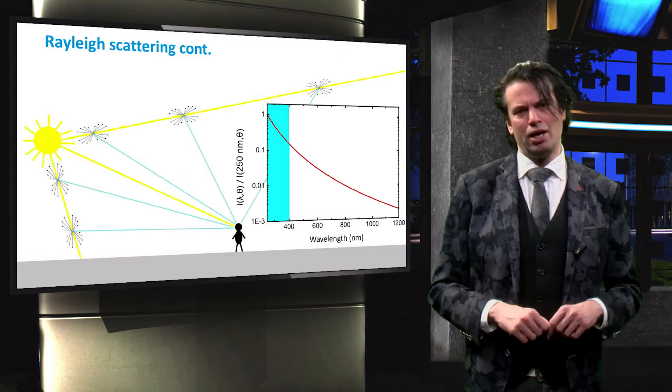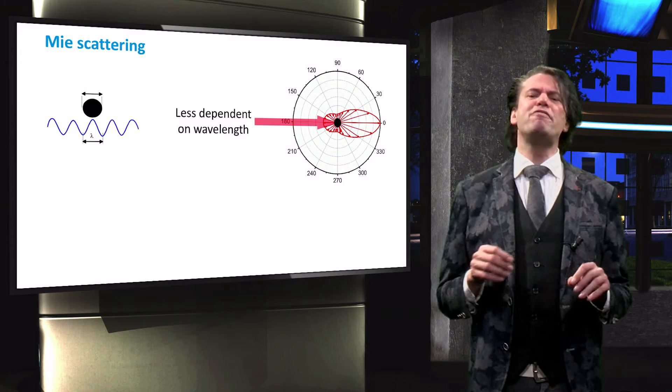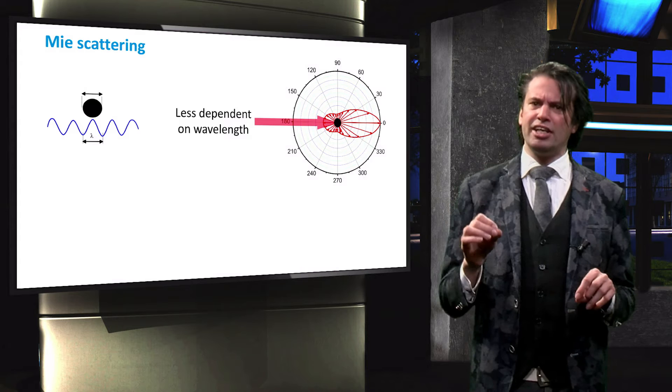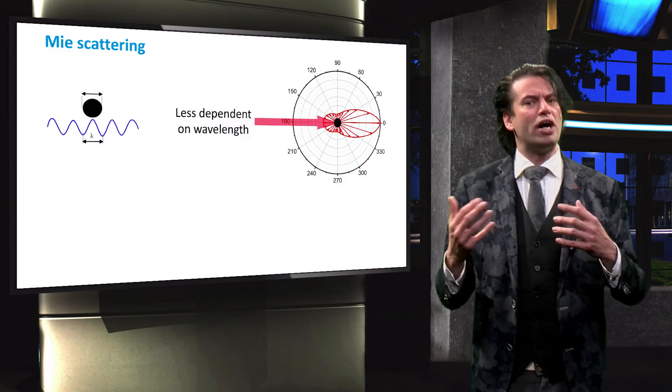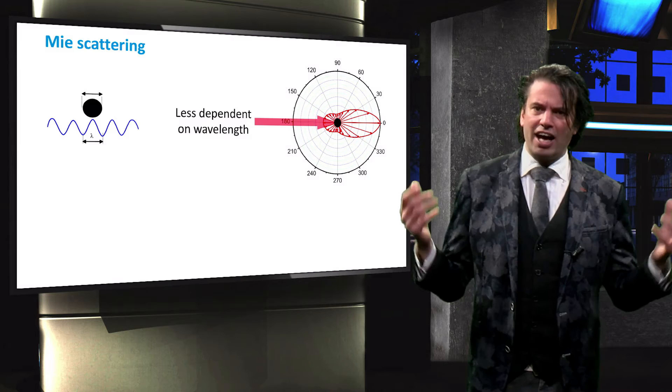But what about larger particles? Gustav Mie first derived the solutions to the Maxwell equations, where the particle size is of the same order of magnitude as the photon wavelength. Mie scattering is much less dependent on the wavelength, and therefore scatters blue and red light about as effectively. We can gather that, unlike Rayleigh scattering, Mie scattering occurs mainly in the forward directions.